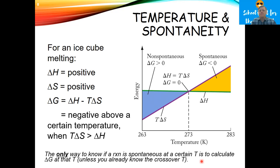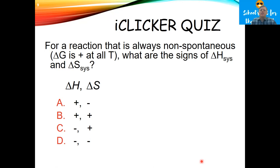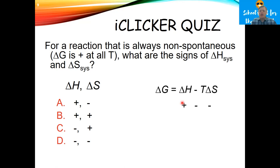Let me give you a little practice. For a reaction that is always non-spontaneous — where delta G is positive at all temperatures — what are the signs of delta H and delta S? Since delta G equals delta H minus T delta S must be positive at all temperatures, delta H must be positive and we must subtract a negative number, giving positive plus positive. So the answer is delta H positive and delta S negative.